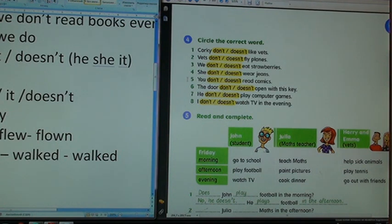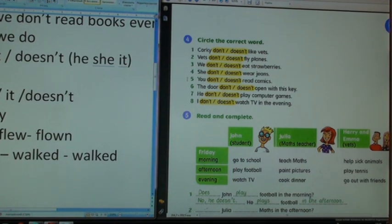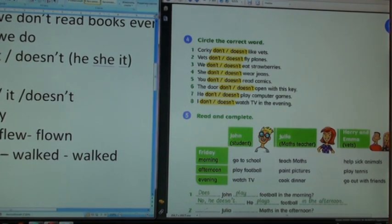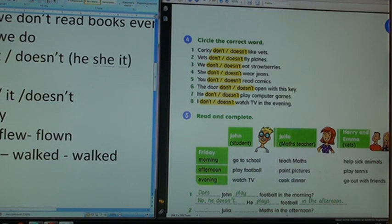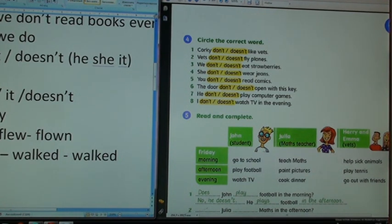Good. Number six. The door don't open. Ah, first mistake. Door, does it definitely have a soul or not? In door. Definitely not. There's no soul in a door. That's for sure. It. Therefore the door doesn't open with this key. Doesn't open with this key. Okay. Well, nothing. One or even two mistakes are allowed.